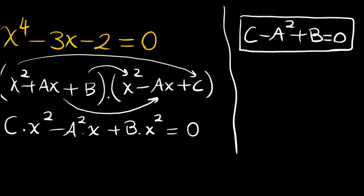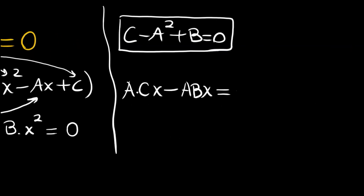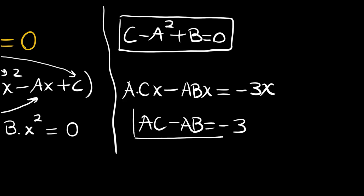The x terms come from ax times C, giving ACx, and B times negative ax, giving negative ABx. This equals negative 3x from the original equation. So AC minus AB equals negative 3, which is our second equation.